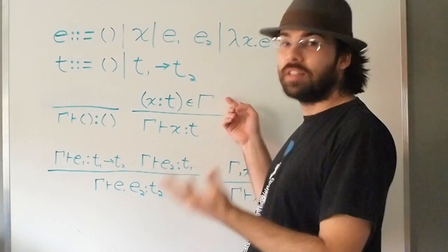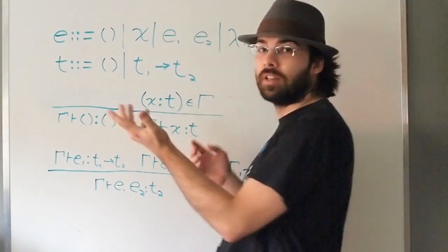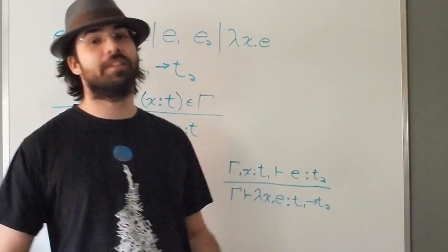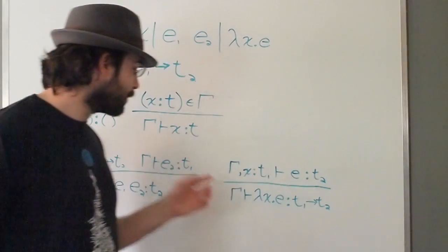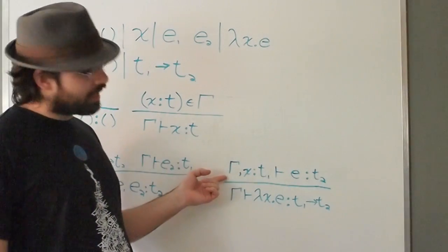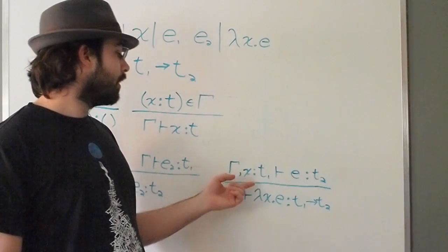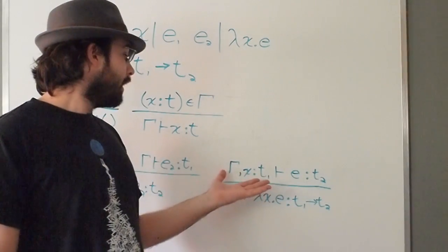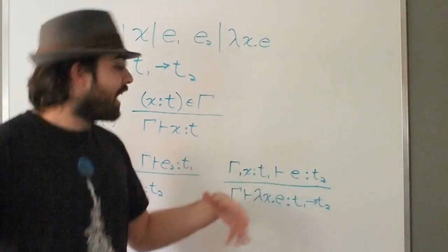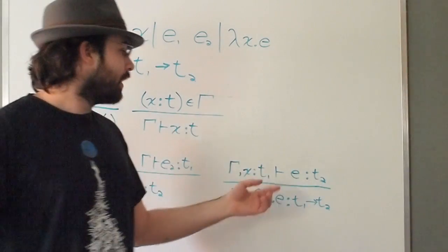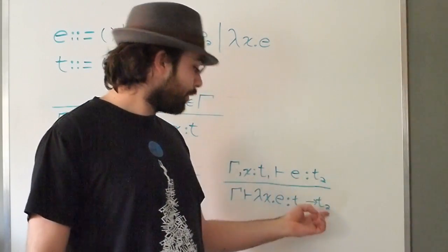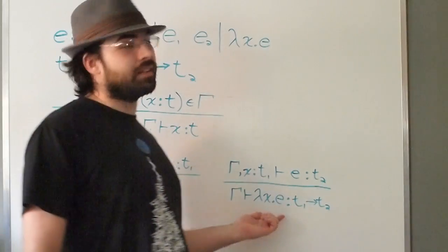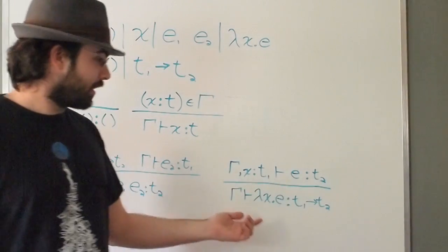The interesting case is function abstraction. If we augment the context with a variable x with the type of the parameter, then if the body can now be well typed as having the type of the return value, then lambda x e is well typed and it has the type t1 arrow t2.